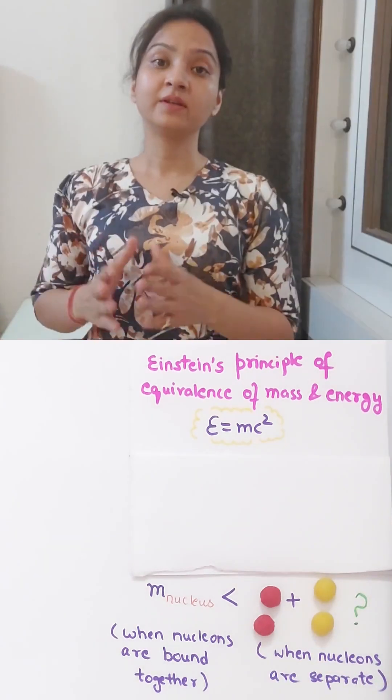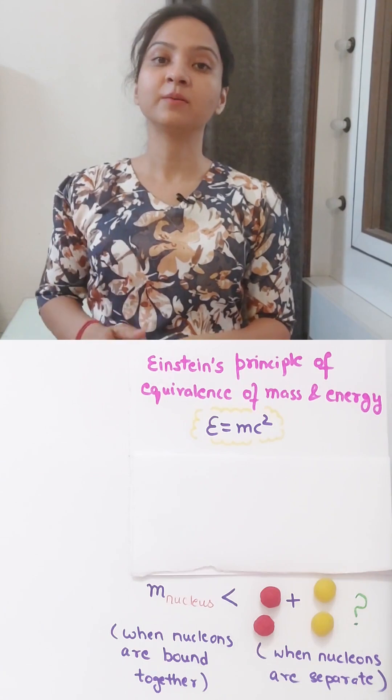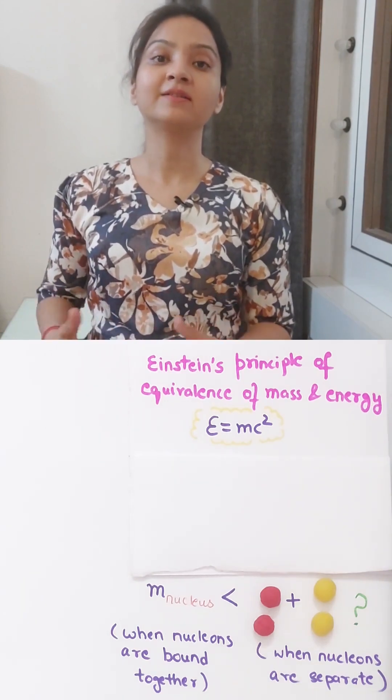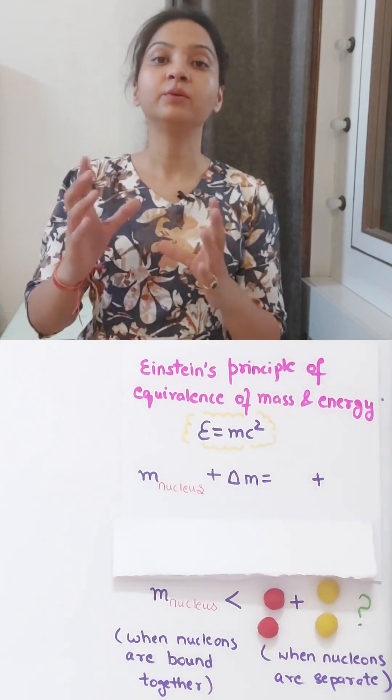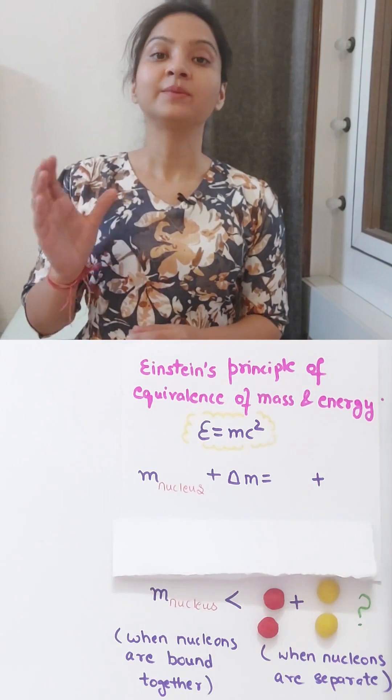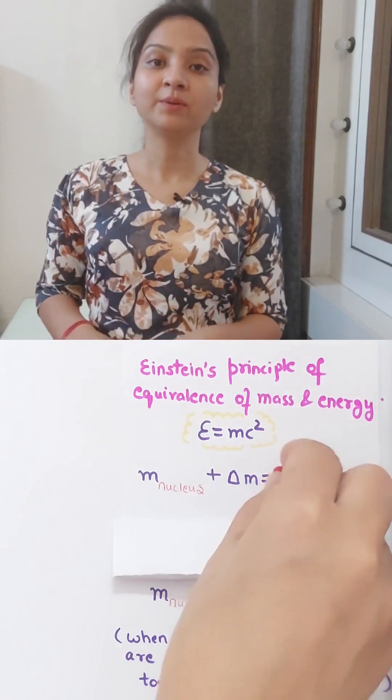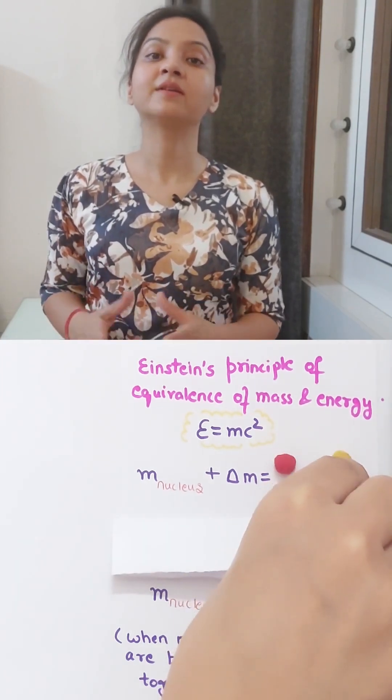So why does this happen? The reason is when a nucleus is formed, certain amount of mass is destroyed and gets converted into energy. That means that mass of the nucleus when the nucleons are bound together plus some delta M should be equal to the mass of the nucleons when they are separate.